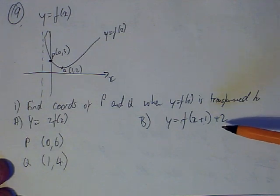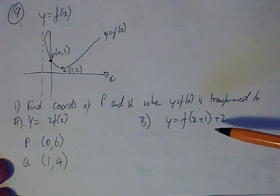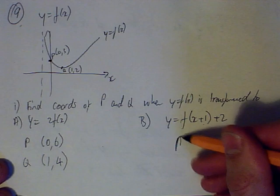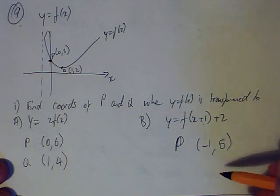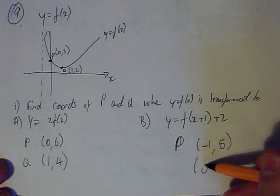The second one here, you have to identify this as two translations. We have a horizontal translation, which is 1 to the left, and a vertical translation, which is 2 up. So, you've got to take 1 off all the x coordinates and add 2 to all the y coordinates. So, P becomes minus 1, 5, and Q becomes 0, 4.